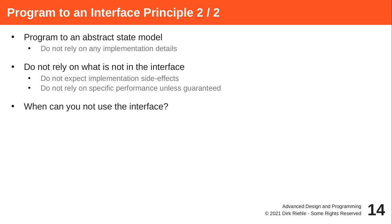Implementing functionality in clients by relying on getters and setters that give access to the implementation state is a bad idea — you're breaking the abstract state model and your code becomes less evolvable. Other subtle dependencies arise if you know a certain algorithm is sequential versus parallel and start relying on its performance. Do not make assumptions beyond what is stated in the explicit or implicit interface.